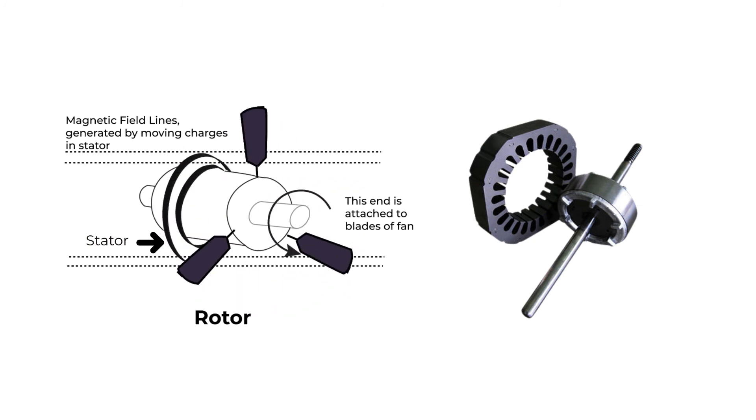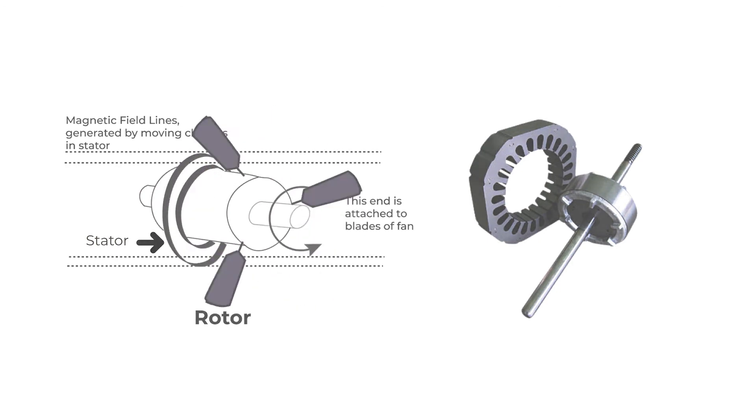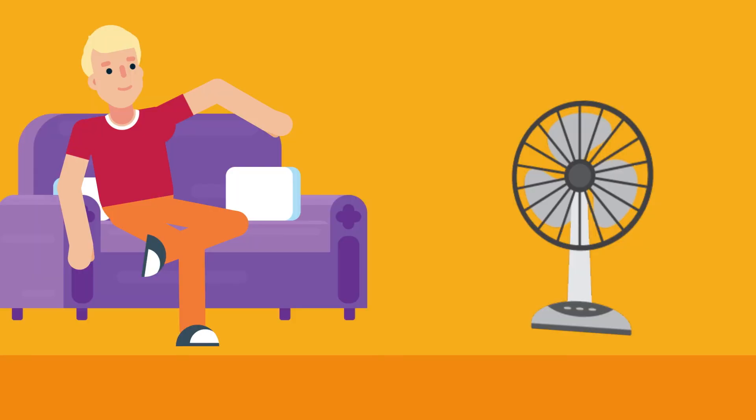The rotor is made from a conducting material and as it comes into the magnetic field, it experiences a force in a circular direction. This results in the movement of blades which causes air to move from the blades in the forward direction and we experience the breeze.